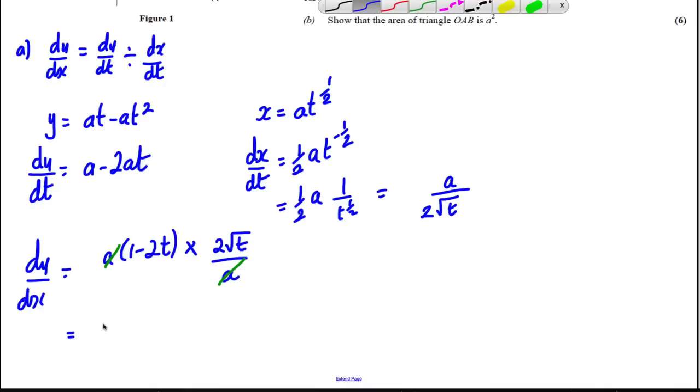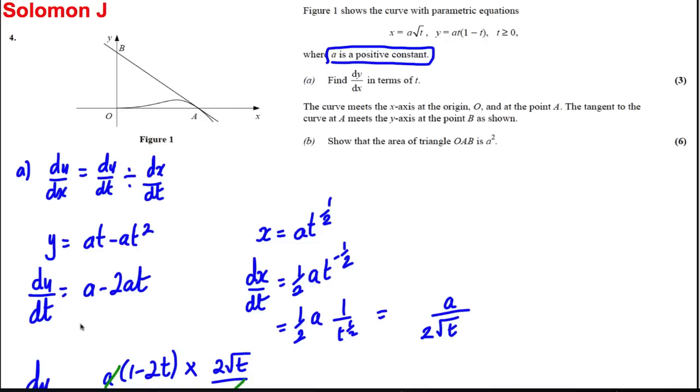So (1 - 2t) multiplied by 2√t gives me 2√t(1 - 2t), and that is my dy/dx.